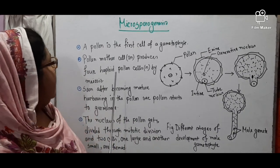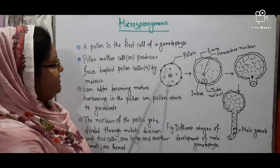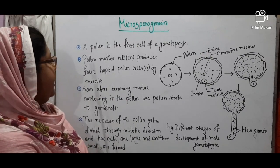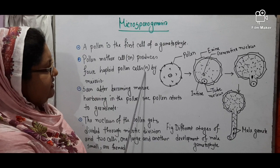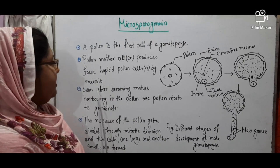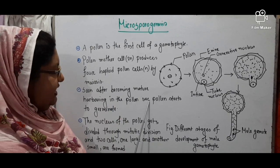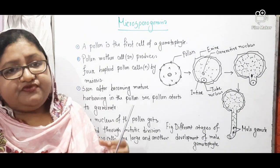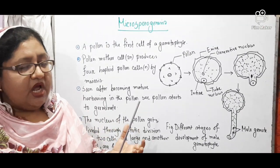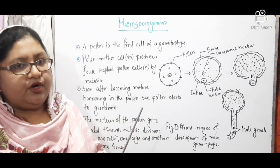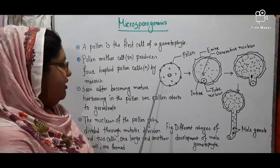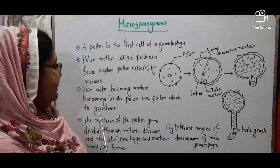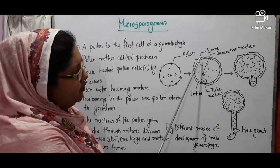Now the description. A pollen is the first cell of the gametophyte. The pollen mother cell is diploid and produces four haploid pollen cells by meiosis cell division. Soon after becoming mature, harboring in the pollen cell, pollen starts to germinate. Harboring means it takes a few days to become mature and stays for a short period. When the pollen becomes mature, it stays in the pollen cell for a short period, then starts to germinate. The pollen has two layers: the outer layer is known as exine and the inner layer is known as intine.